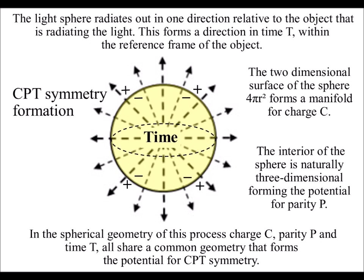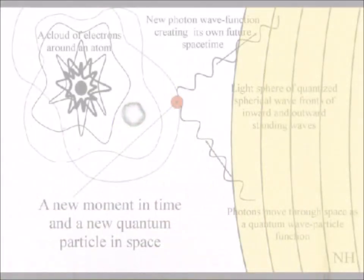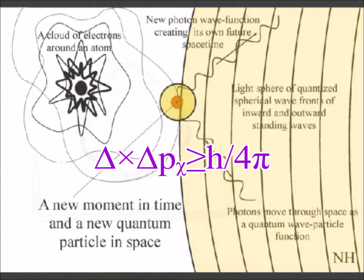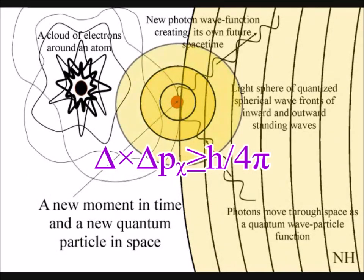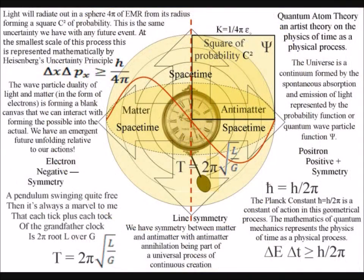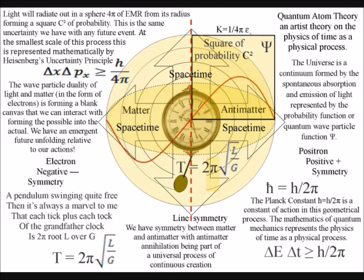Light radiates out as a sphere, and when the surface of the sphere comes in contact with the electron probability cloud of an atom, it forms a photon-electron coupling. Our three-dimensional world changes with the movement of positive and negative charge. We measure this process as the passage of time, with the interior of the sphere forming our three-dimensional space.